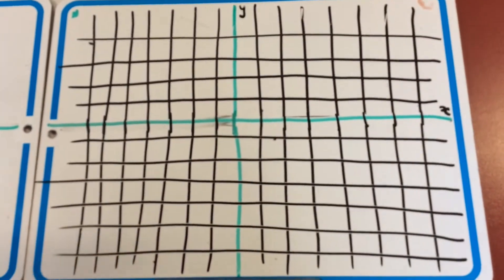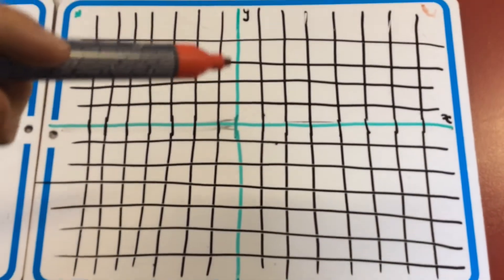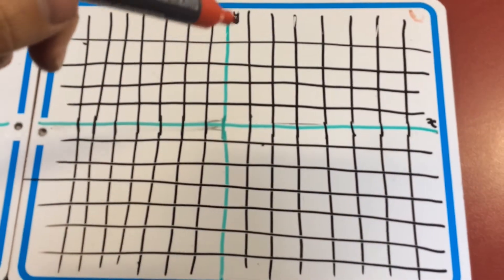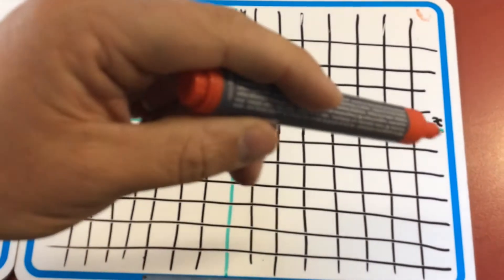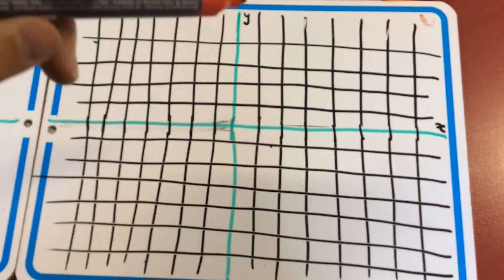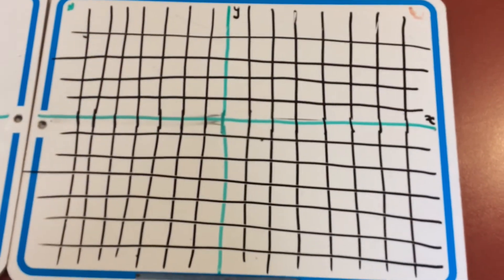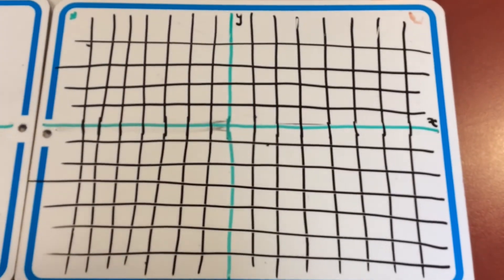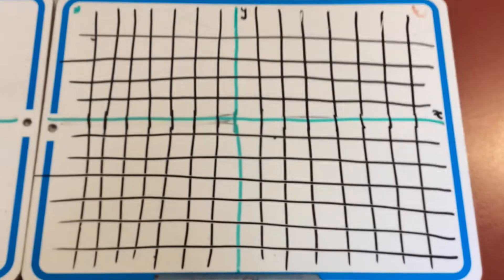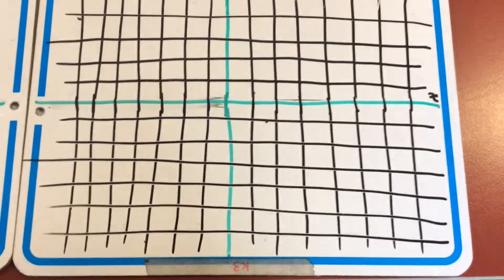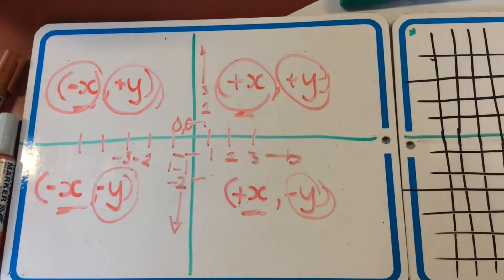Now here I've got another graph written up for you. This one has green lines again representing the zero line - zero line for the y and zero line for the x. So you can see I've got the y and the x all set up there so you can see it really nice and clearly.